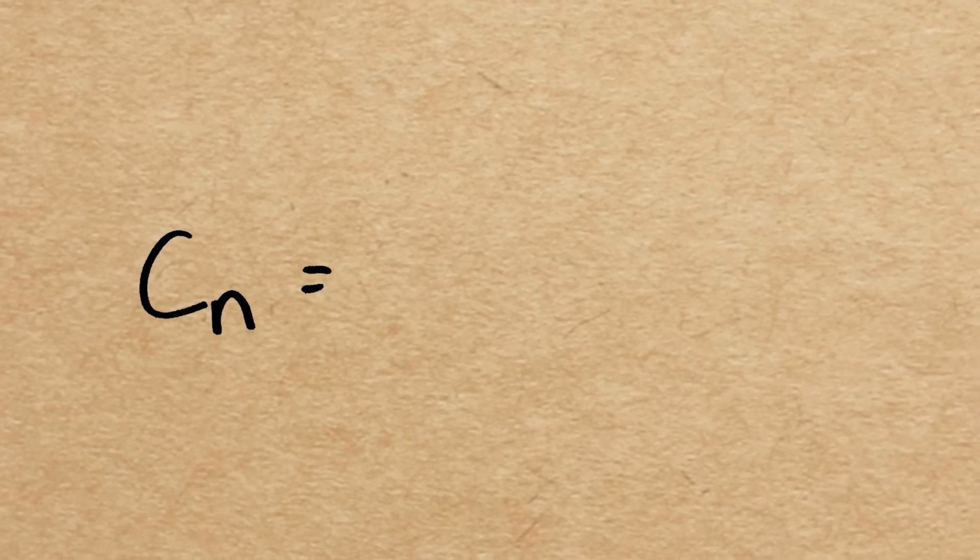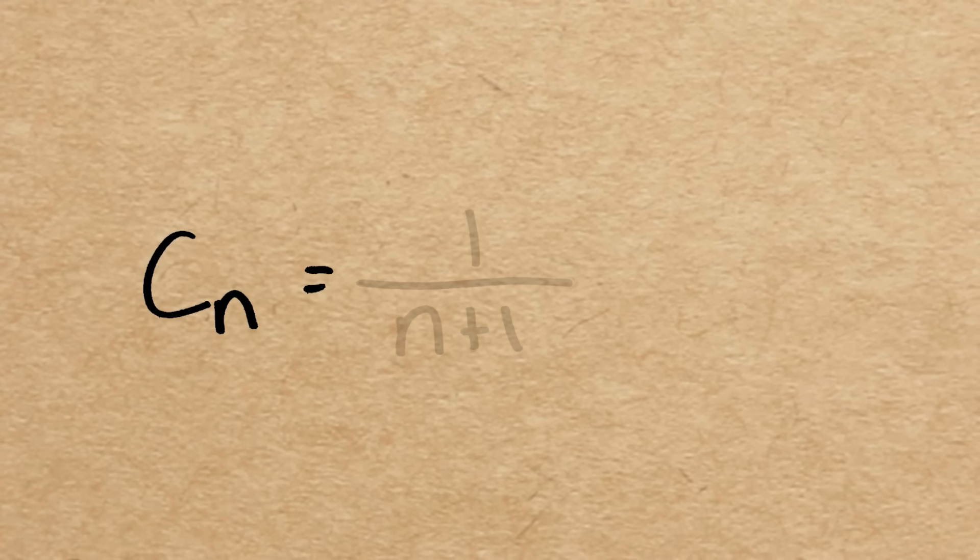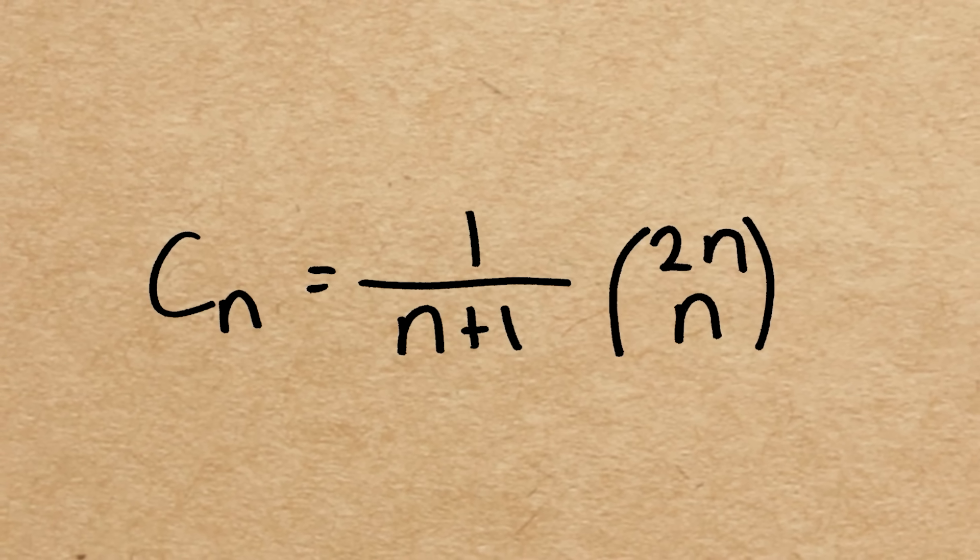So this means that our formula for the Catalan numbers is one over n plus one times two n choose n.